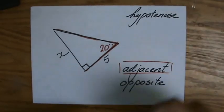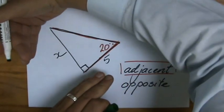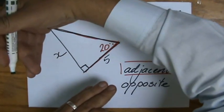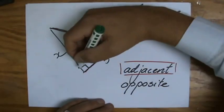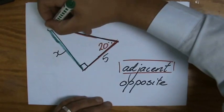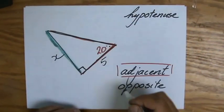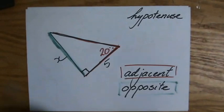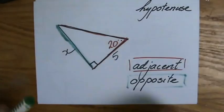Now, what is the opposite? The opposite is always that side that is opposite of me, across me. It's not touching me. So, in this particular case, that would be my x. That is the side in the right angle triangle that is opposite of me.